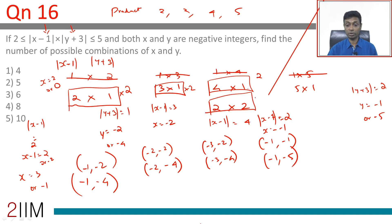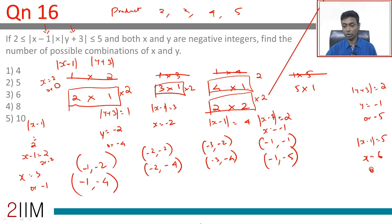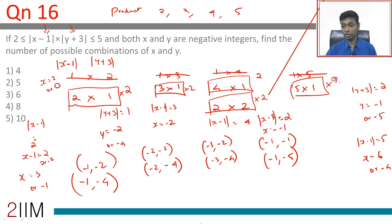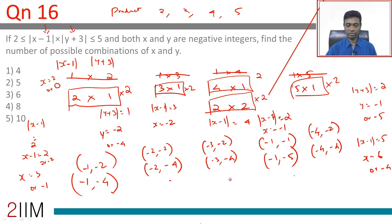Finally, 5×1: |x-1| = 5, so x = 6 (not valid) or x = -4. x = -4 works. |y+3| = 1 gives two possibilities: (-4, -2) and (-4, -4). In total: 2+2+2+2+2 = 10 possibilities.